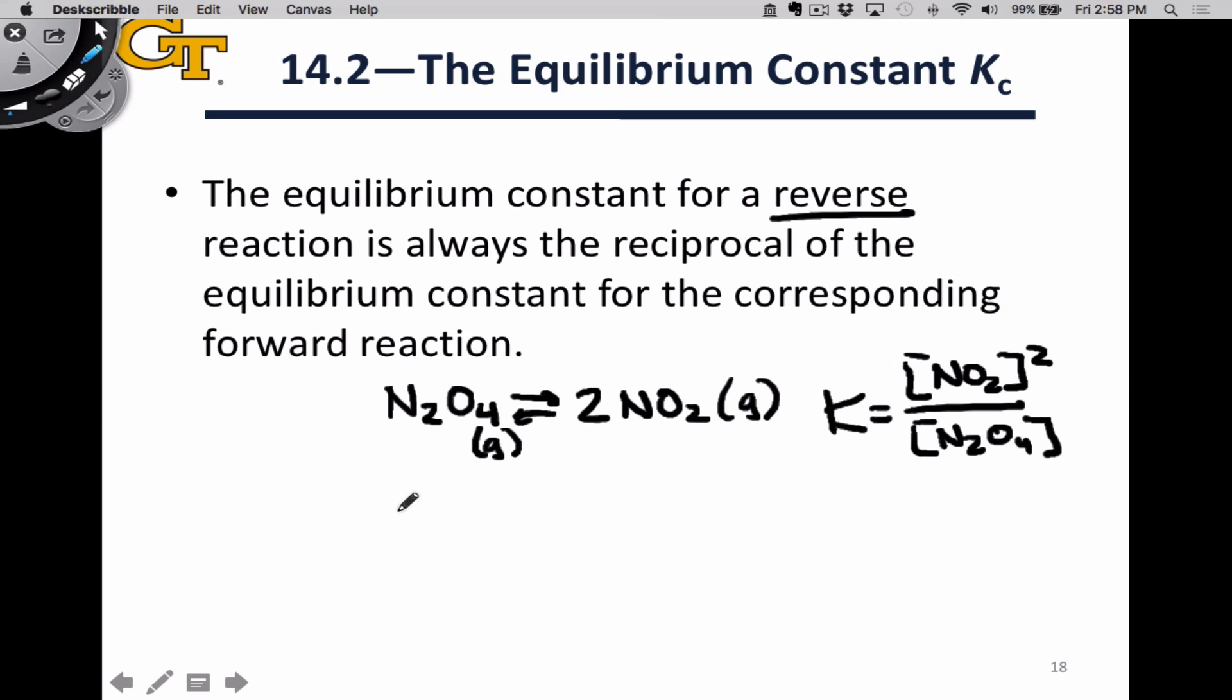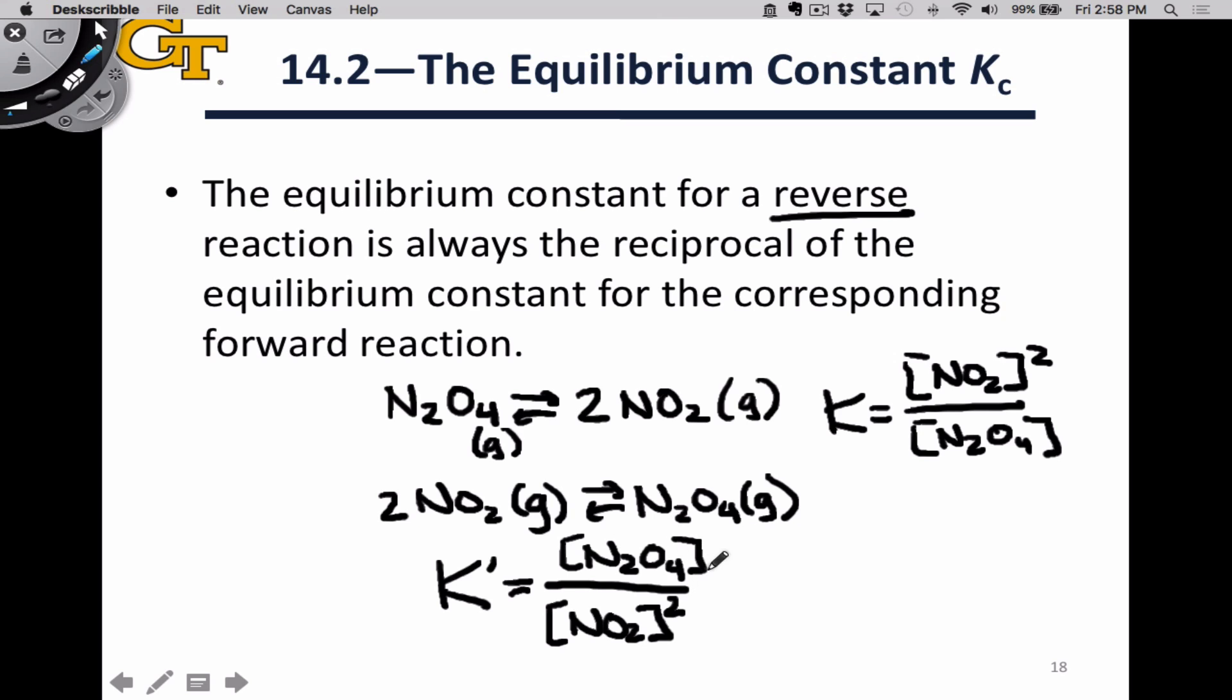If I simply reverse the reaction and make 2NO2 the reactants and N2O4 the products, well all I've really done then is just rebranded what I'm calling the products and the reactants. So what appears within each portion of this fraction is going to be the same. We're still going to have NO2 squared since the coefficient hasn't changed, but we're calling it a reactant now. So it's going to appear in the denominator of the expression, while N2O4, which we're now calling a product, is going to appear in the numerator. You should notice that this expression is simply the reciprocal or the multiplicative inverse of the original expression. It's k to the negative 1 power. So the new k is k to the negative 1 power, or the reciprocal of the original equilibrium constant.